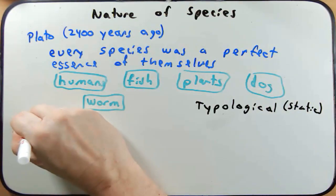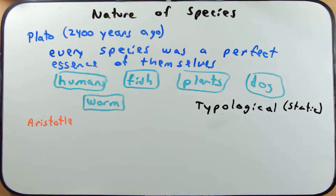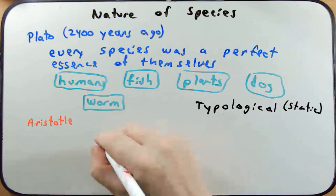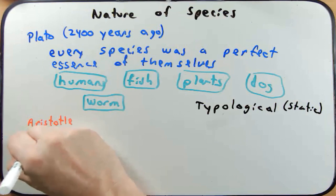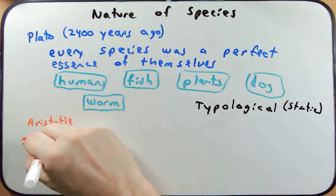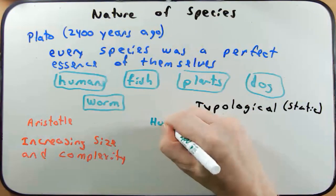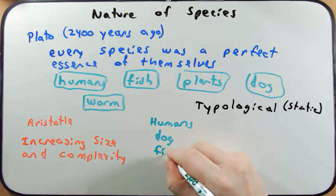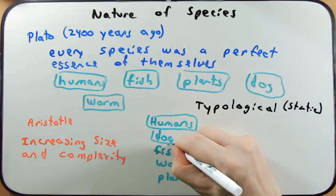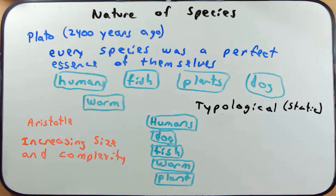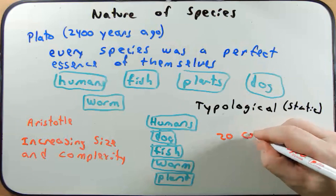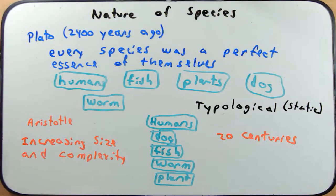Then one of his students, Aristotle, came along. He still believed in typological thinking, but he believed in a great chain of being where there was a sequence of increasing size and complexity — humans, dog, fish, worm, plant. They still existed in their own types, but there was increasing size and complexity. It was still typological, and Aristotle's thinking of the great chain of being existed for 20 centuries.